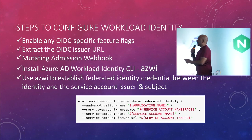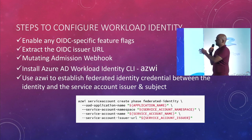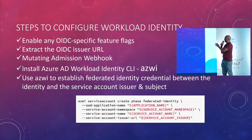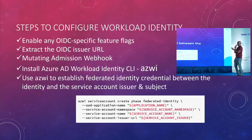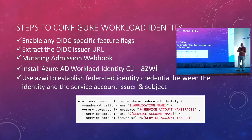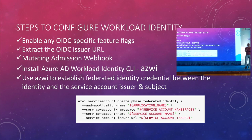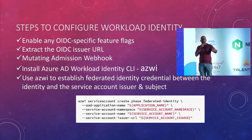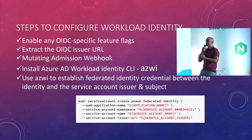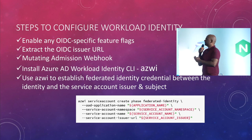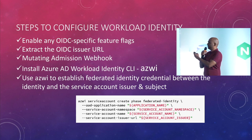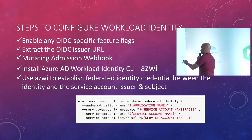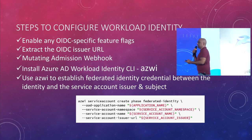There are only a few steps available. You need to configure the OIDC-specific feature flags and get the OIDC URL. You need to create a mutating admission webhook, then install ACWI. Once you create the service account and federated account, you can test it and it will give access to the Azure resource.